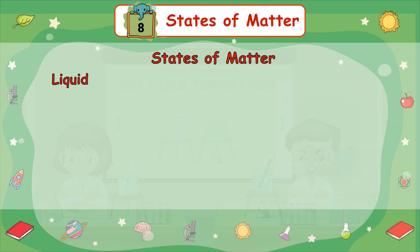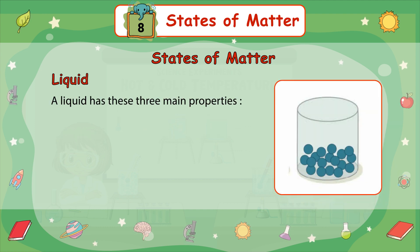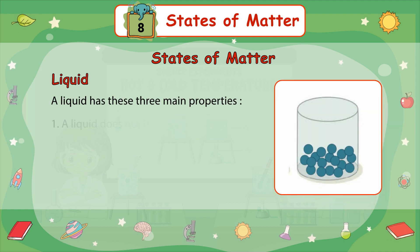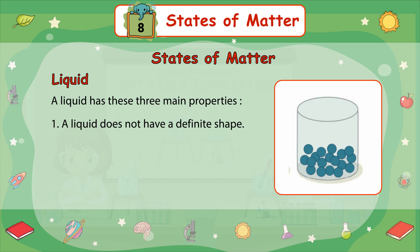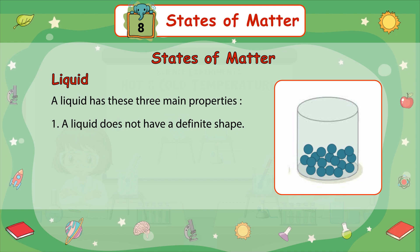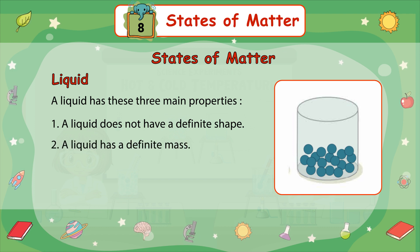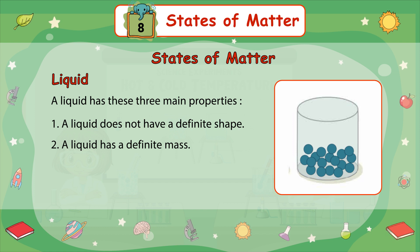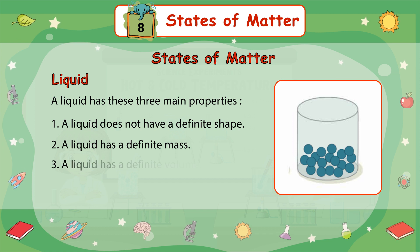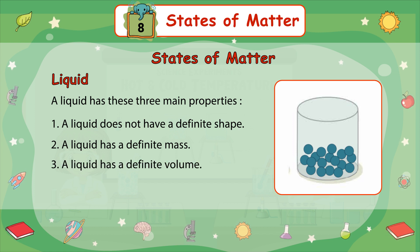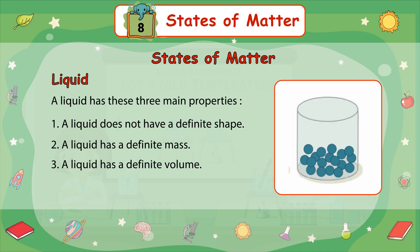A liquid has three main properties. Number 1: a liquid does not have a definite shape. Number 2: a liquid has a definite mass. Number 3: a liquid has a definite volume.